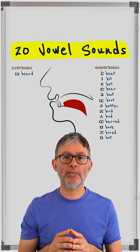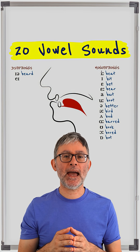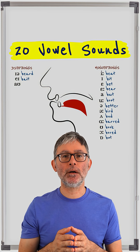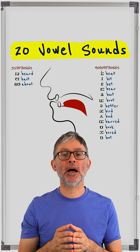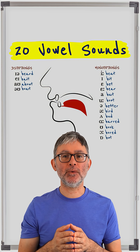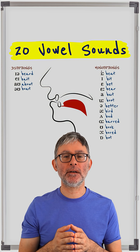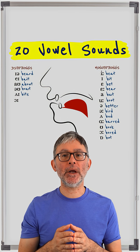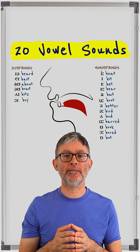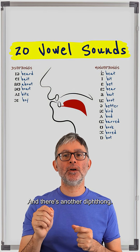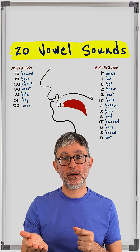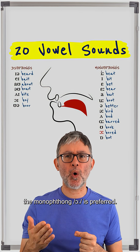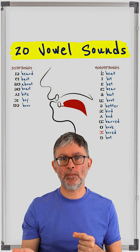'ear' — beard, 'ey' — bait, 'ow' — about, 'o' — boat, 'eye' — bite, 'oi' — boy. And there's another diphthong, 'ua' — 'bua', but this isn't really used these days. The monophthong 'or' is preferred, so: 'bore'.